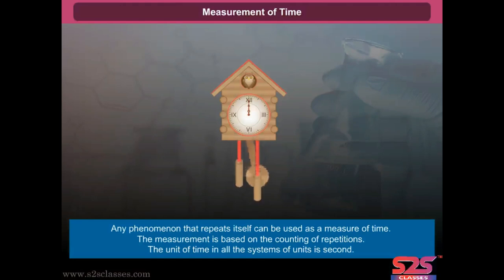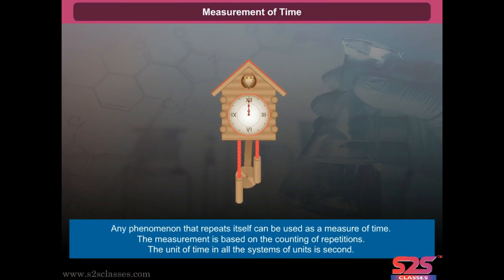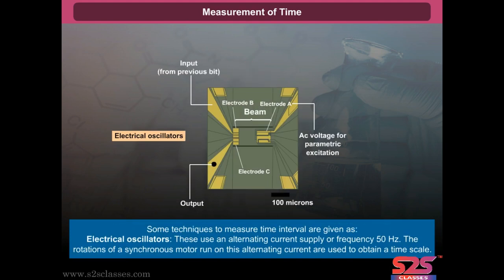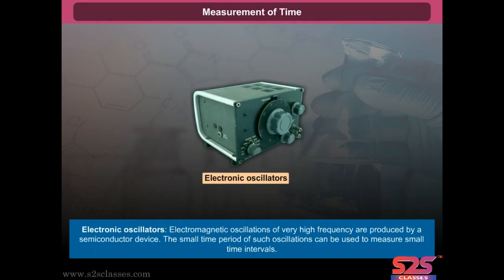Any phenomenon that repeats itself can be used as a measure of time, based on the counting of repetitions. The unit of time in all systems of units is the second. Some techniques to measure time intervals are: electrical oscillators, which use an alternating current supply of frequency 50 Hz, and electronic oscillators, where electromagnetic oscillations of very high frequency produced by a semiconductor device are used — the small time period of such oscillations can measure small time intervals.